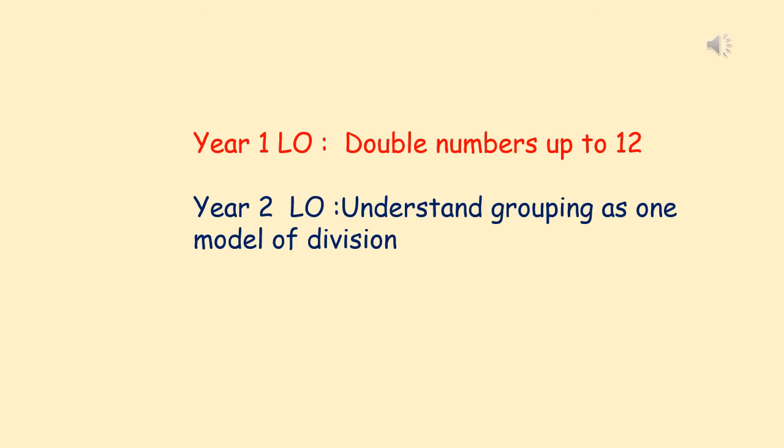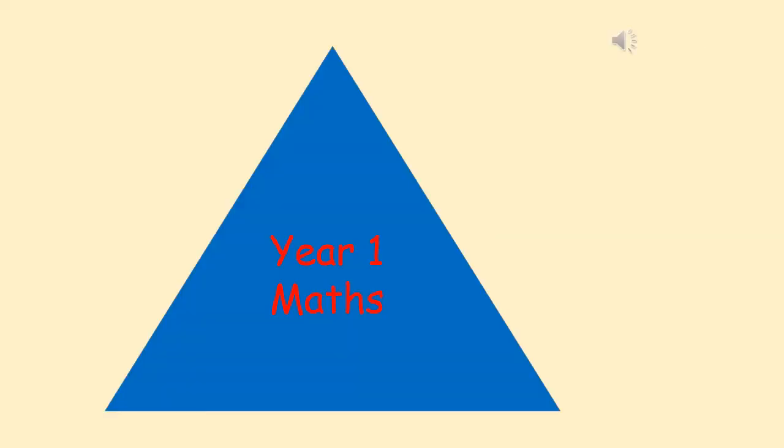The Year 1 learning objective is to double numbers up to 12, and the Year 2 learning objective is to understand grouping as one model of division. This is the Year 1 maths section, forward the video for the Year 2 maths.